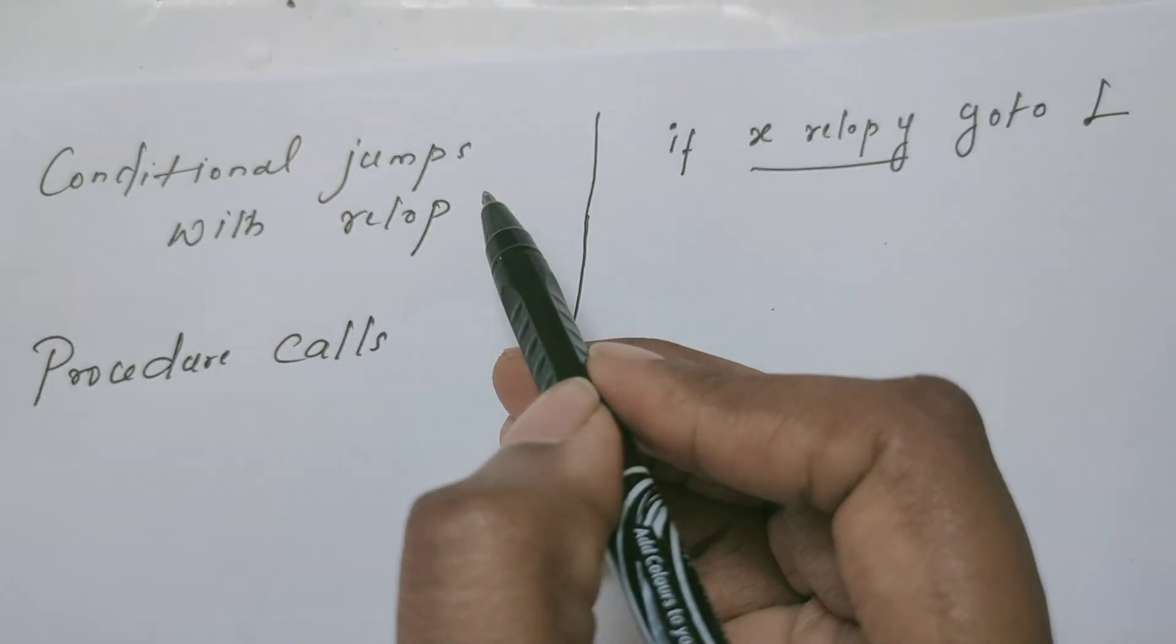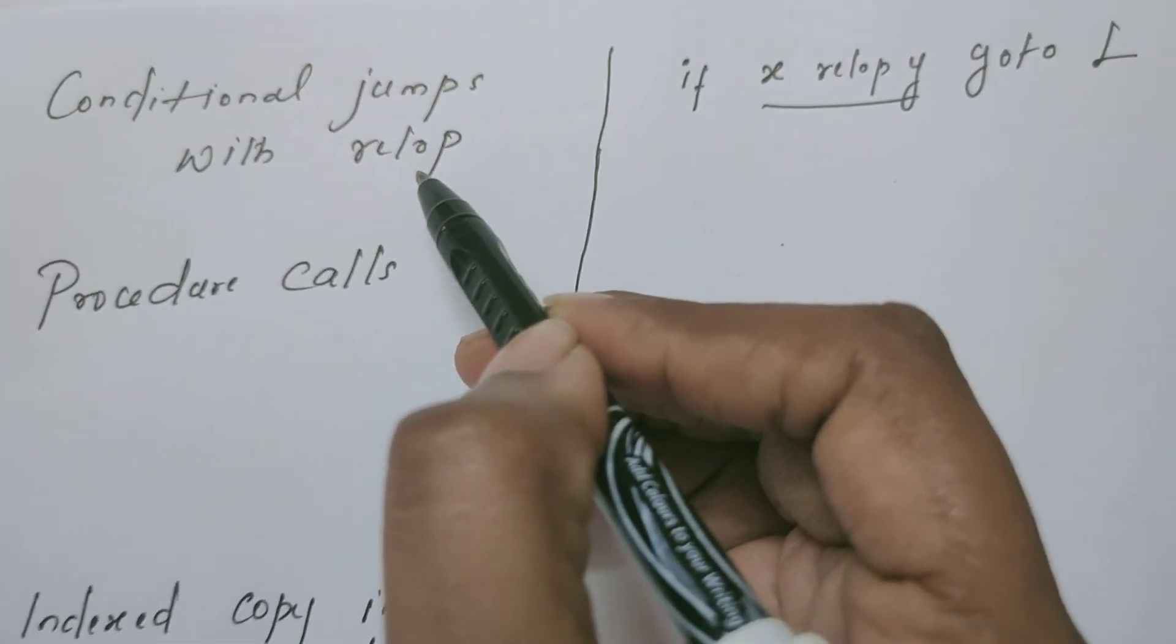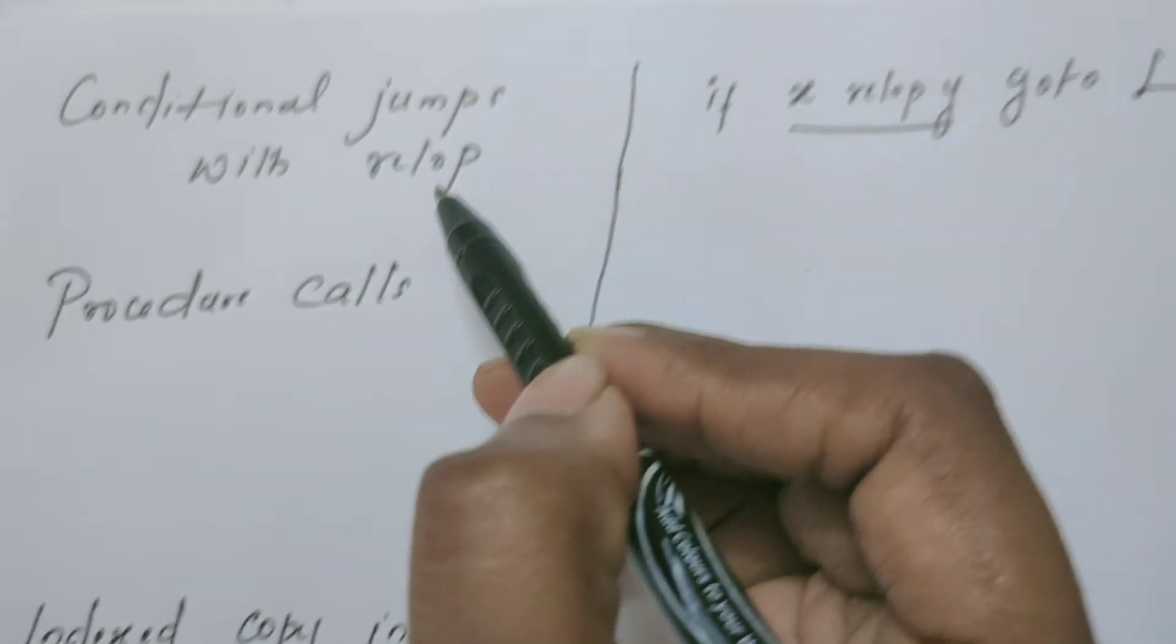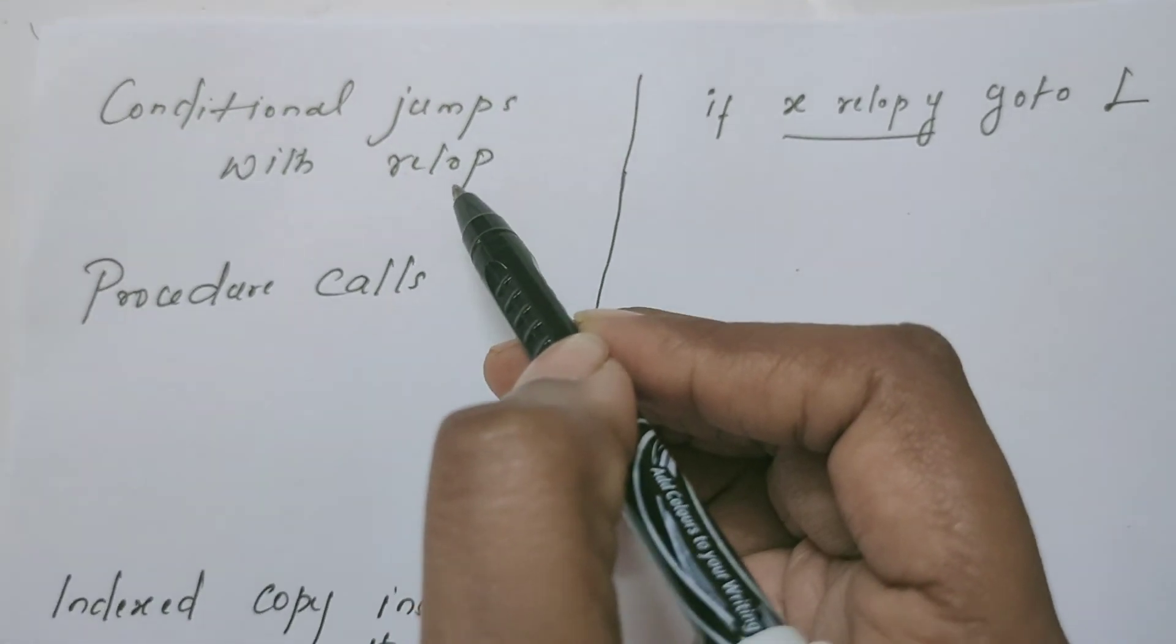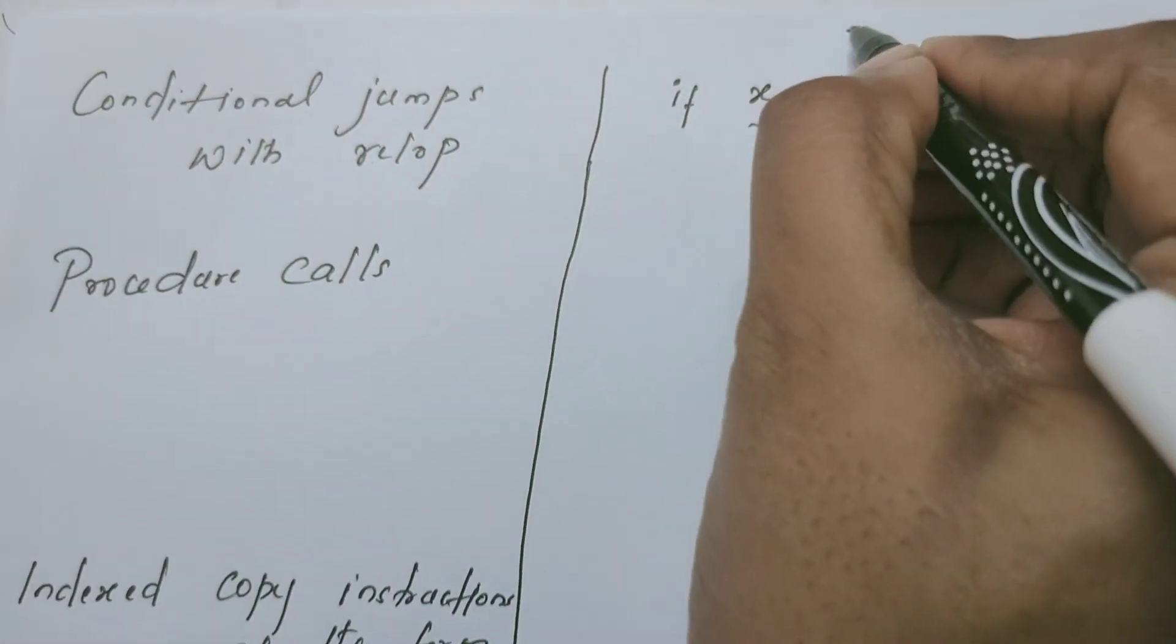If you have conditional jumps where the conditions are written with relational operators, the relational operator can be anything: less than, greater than, equal to, less than or equal to, etc. We can write the equivalent three address code in this format.